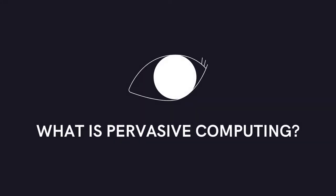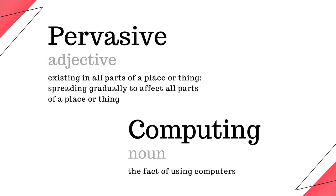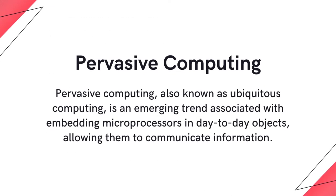So what is pervasive computing? Pervasive, as defined by the Oxford Dictionary, means existing in all parts of a place or thing, or spreading gradually to affect all parts of a place or thing. Computing means the fact of using computers. Pervasive computing, also known as ubiquitous computing, is an emerging trend associated with embedding microprocessors in day-to-day objects, allowing them to communicate information.